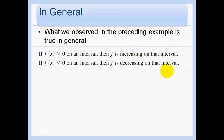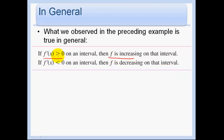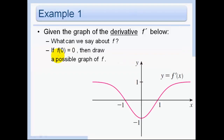In general, we know f prime positive means f is increasing, and this is key in being able to draw the function and its derivative. So if we are given the graph of the derivative f prime, what can we say about f? Here's the derivative.